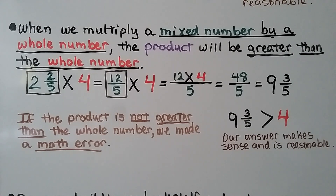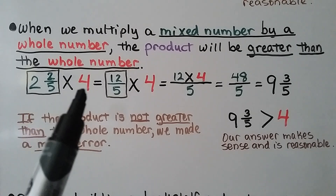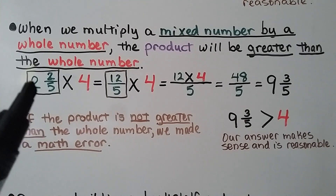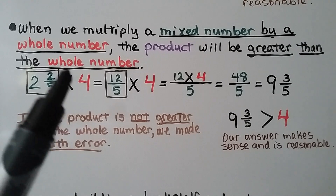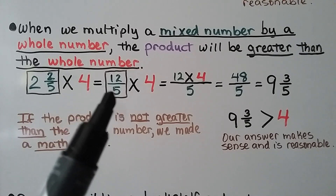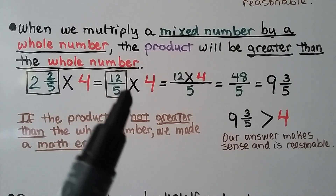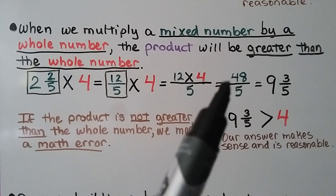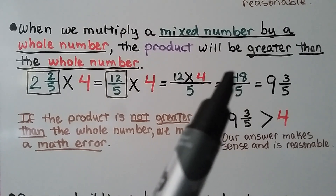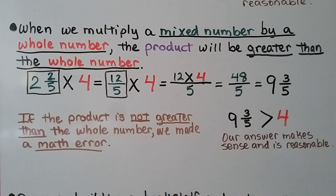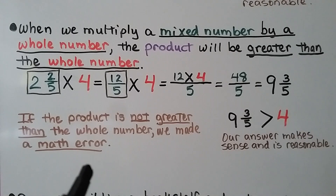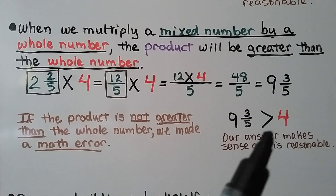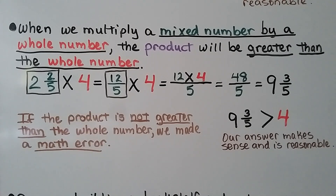But when we multiply a mixed number by a whole number, the product will be greater than the whole number. Now we're multiplying a mixed number by a whole number. We change the 2 and 2 fifths into a fraction greater than 1: 2 times 5 is 10, plus 2 is 12, written over the denominator — we have 12 fifths. Now we multiply by the 4 whole: 4 times 12 gives us 48, written over the same denominator — we get 48 fifths. We write it in simplest form by thinking 48 divided by 5, which gives us 9 and 3 fifths. The product 9 and 3 fifths is greater than 4, the whole number factor, so our answer makes sense and is reasonable.